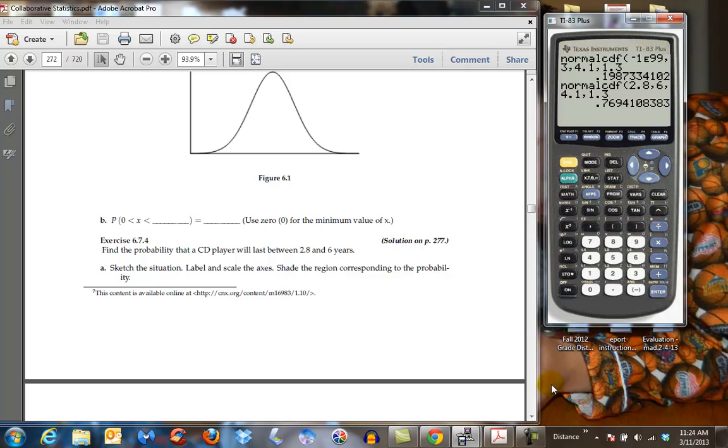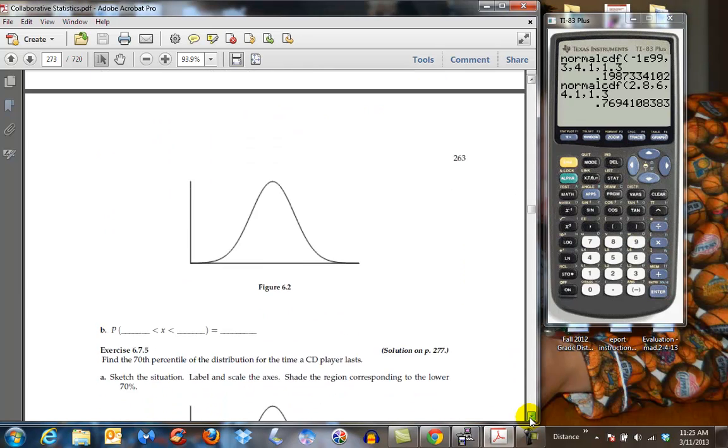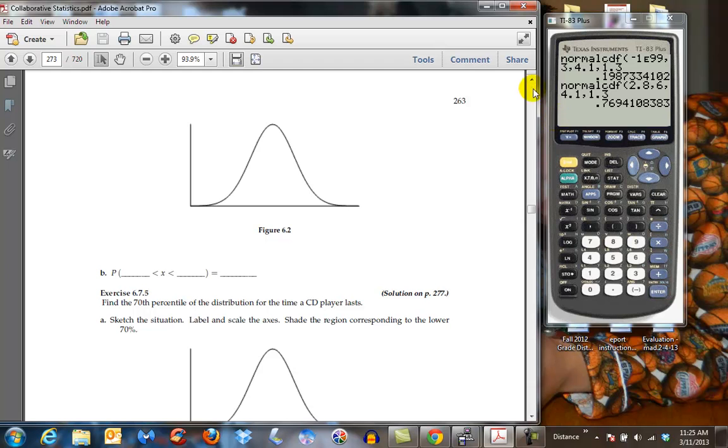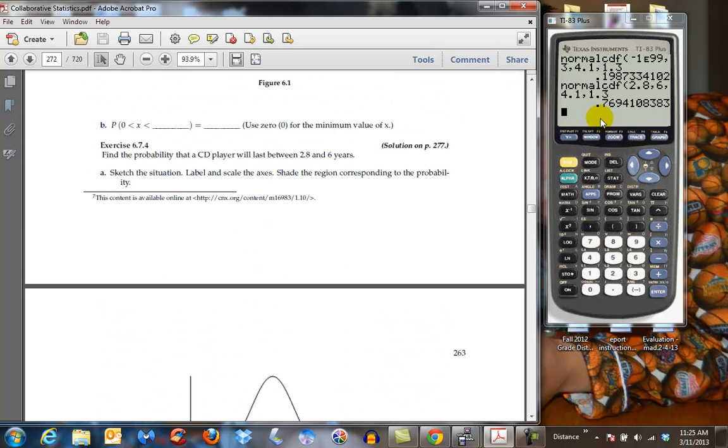If we are given a greater than, so this is if we have between, we have to, we've been given our two bounds. If we have to do a greater than, let's assume that they've given us one. They didn't. And so let's find the probability that it's going to be greater than a value, say 5 years.